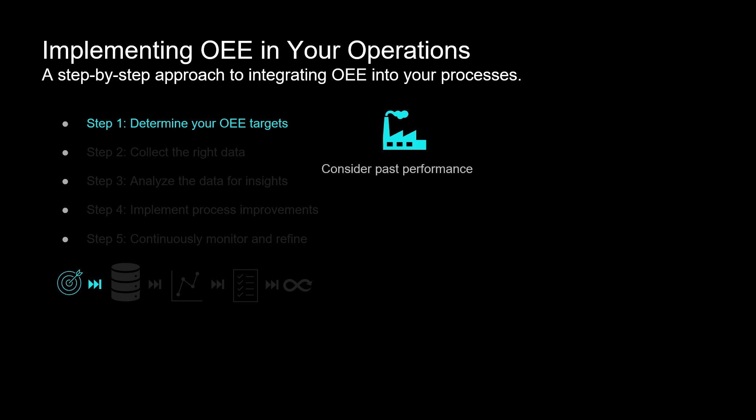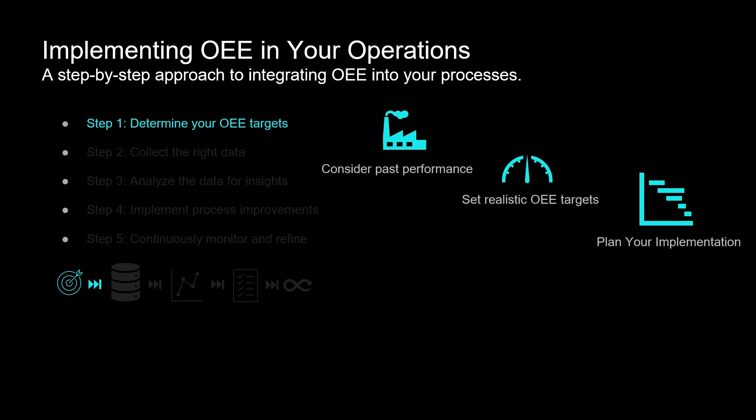Step 1 in detail: consider past performance. Evaluate your historical data to understand your current operational performance and identify areas for improvement. Set realistic OEE targets that align with your business objectives and reflect your organization's capabilities — these targets will serve as benchmarks to measure success. Plan your implementation starting with a pilot line, allowing for smoother integration and minimizing potential disruptions to production.